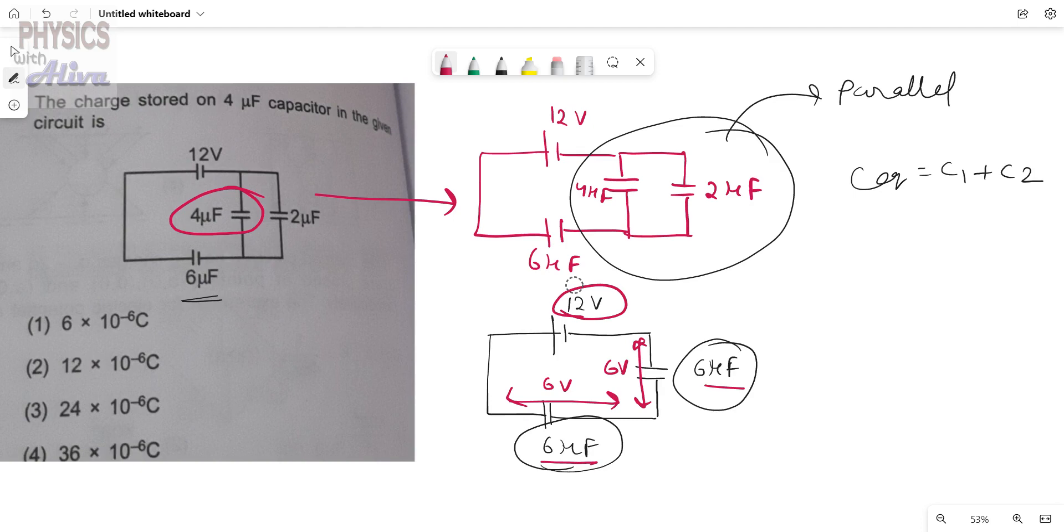the potential of the battery 12V is equally distributed, that is 6V and 6V. So here for this 6uF capacitor, the potential across this 6uF capacitor is 6V. So from this we can say that the potential across these two capacitors is also 6V.